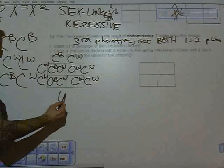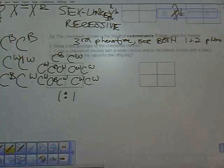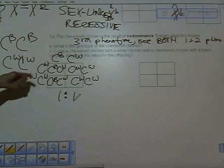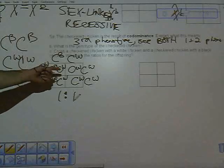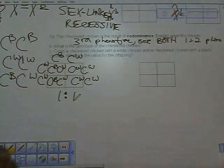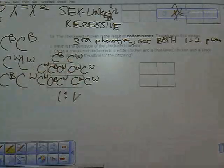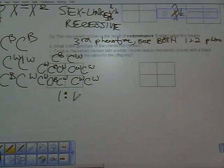Ratios in this case would be one to one for both genotype and phenotype. One C^B C^W to one C^W C^W, one checkered to one white. Same ratio for genotype and phenotype.